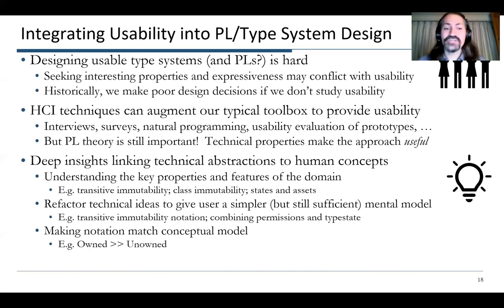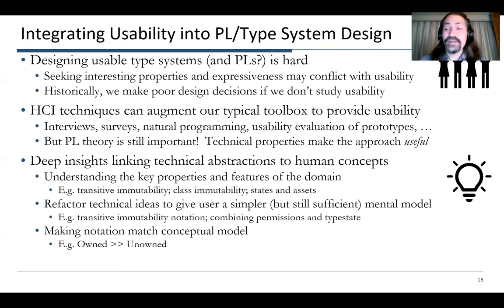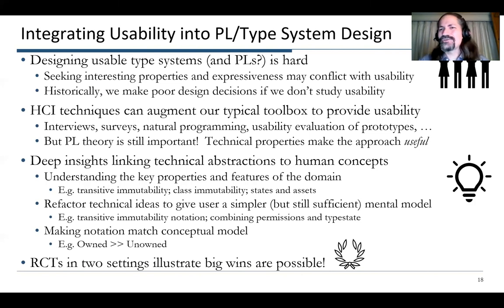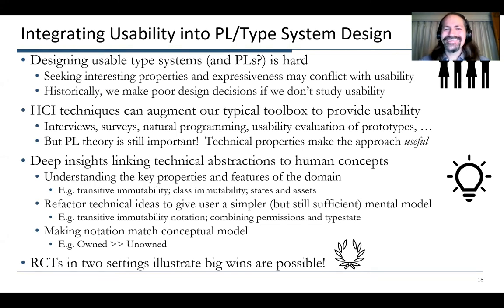Finally, making the notation match the conceptual model — instead of borrowing, we used a kind of pre- and post-condition notation to show what the typestate was before and after. Did it work? In the end, randomized controlled trials in two settings illustrate that big wins for usability are possible. So try it out — see if you can integrate some usability into your work, and I'd be happy to take questions. Thanks.